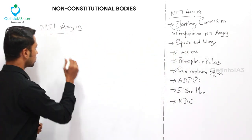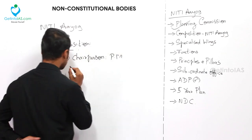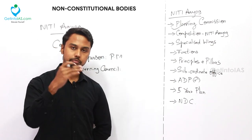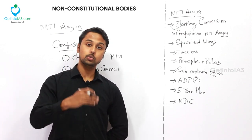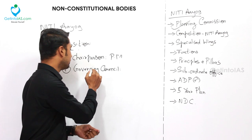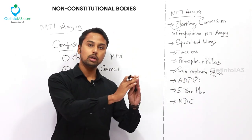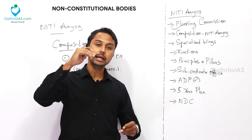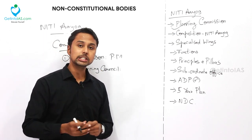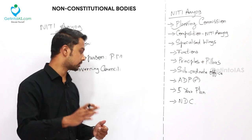Now the composition of NITI Aayog. The Chairperson is the Prime Minister. Second is the Governing Council, which includes Chief Ministers of all 28 states, Chief Ministers of Union Territories with Legislatures, and Lieutenant Governors of the remaining Union Territories. This represents a clear difference from the Planning Commission, which had no representation of states. NITI Aayog reflects cooperative federalism.